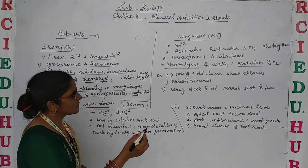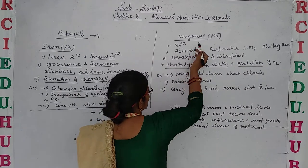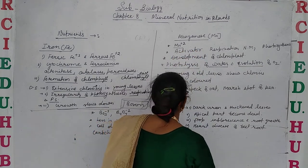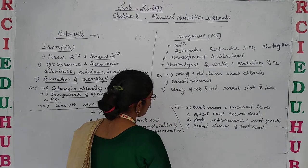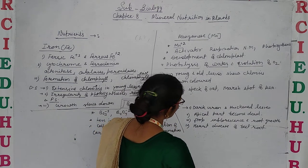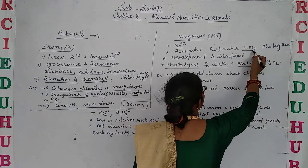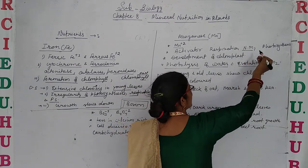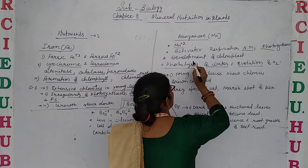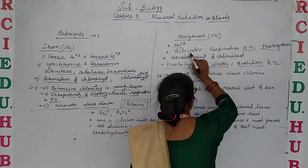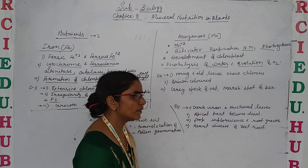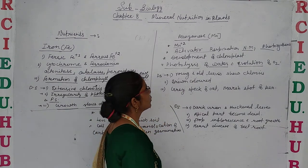Iron deficiency also slows down the growth of the plant. Now let's discuss the next nutrient: manganese. Manganese is absorbed in the form of manganese ions. It is the activator of enzymes involved in respiration, nitrogen metabolism, and photosynthesis — it activates enzymes involved in different metabolic activities.